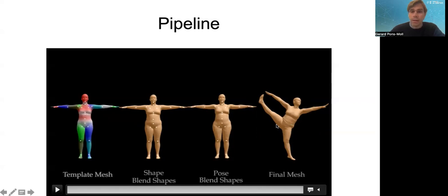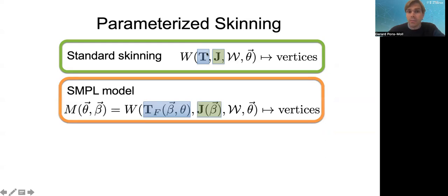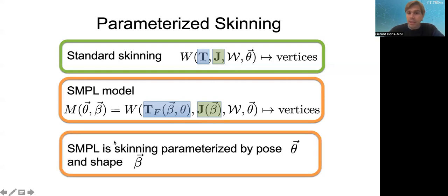Essentially, SMPL parameterizes standard skinning by shape and pose. The template becomes a function of pose and shape; joints are a function of shape; blend weights are fixed; and pose parameters drive the articulation. SMPL is skinning parameterized by pose β and shape θ: M(β, θ) = W(T_P(β, θ), J(β), θ, W).